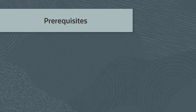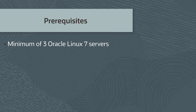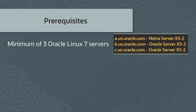To deploy this hyper-converged solution, you must satisfy the following prerequisites. There must be a minimum of three Oracle Linux 7 servers with minimal installation. Currently, this configuration is supported with Oracle Linux 7 only. The minimal release is the same as specified in Oracle Linux Virtualization Manager documentation. For this demonstration, I'll call my three Oracle Linux 7 servers a.us.oracle.com, b.us.oracle.com, and c.us.oracle.com. These three systems are physical servers on the Oracle network.